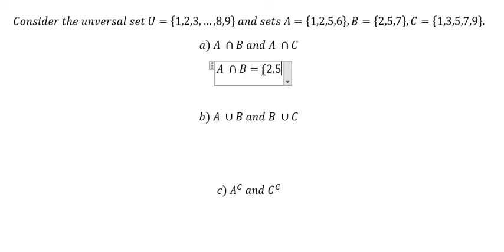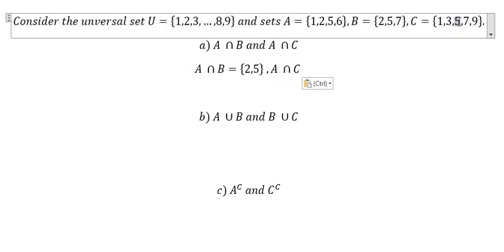Similar for the second one, A intersection C. We need to find the same numbers. We have number 5 in both sets, and we have number 1 in both sets. So A ∩ C = {1, 5}.